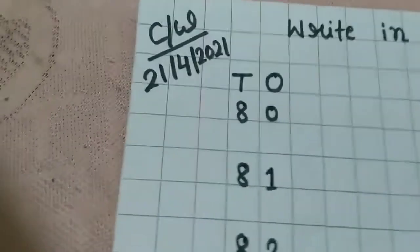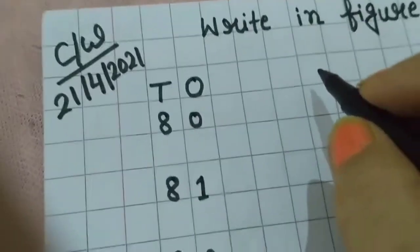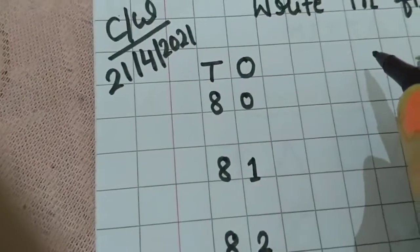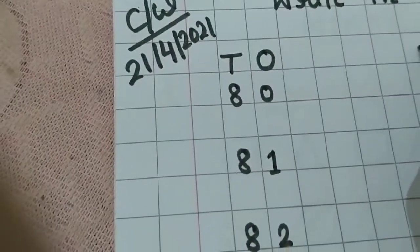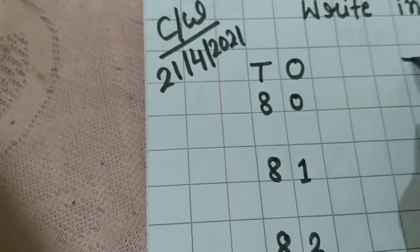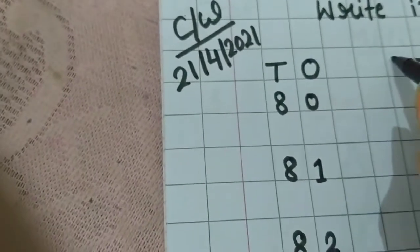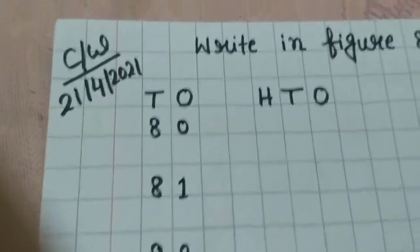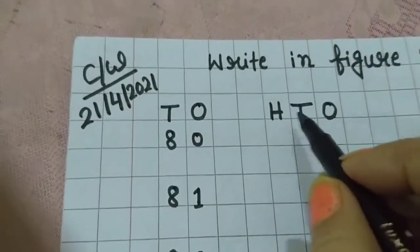But when you will start from 91, that time you have to write Ones, Tens and Hundred. Understood everybody? Ones, Tens and Hundred.